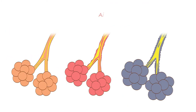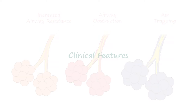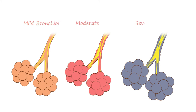This leads to small airway obstruction, air trapping, and increased airway resistance. These pathological features lead to the signs seen in bronchiolitis. Bronchiolitis can be mild, moderate, or severe, depending on the clinical presentation.